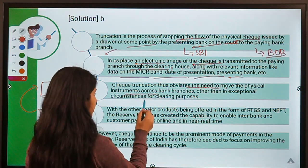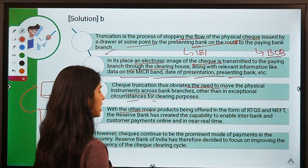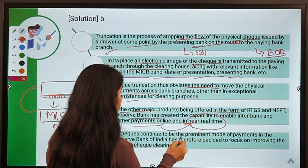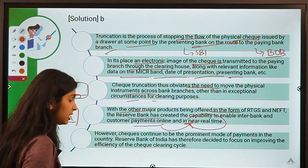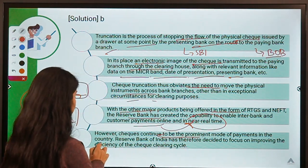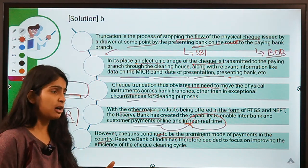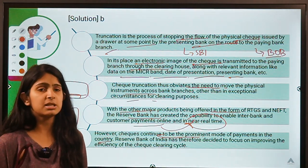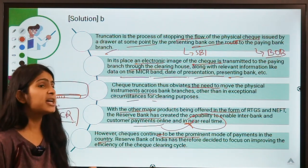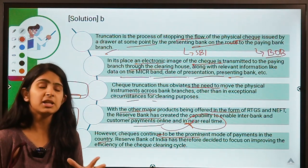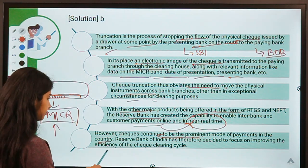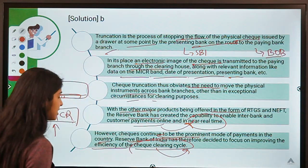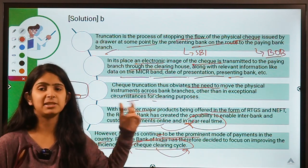CTS eliminates the need for physical movement, reducing time and cost. RBI has also created capabilities for interbank and customer payments online via RTGS and NEFT. Although UPI and payment wallets are growing, checks remain a prominent mode of payment in India, which is why RBI continues to improve and modernize the check clearing system through CTS.